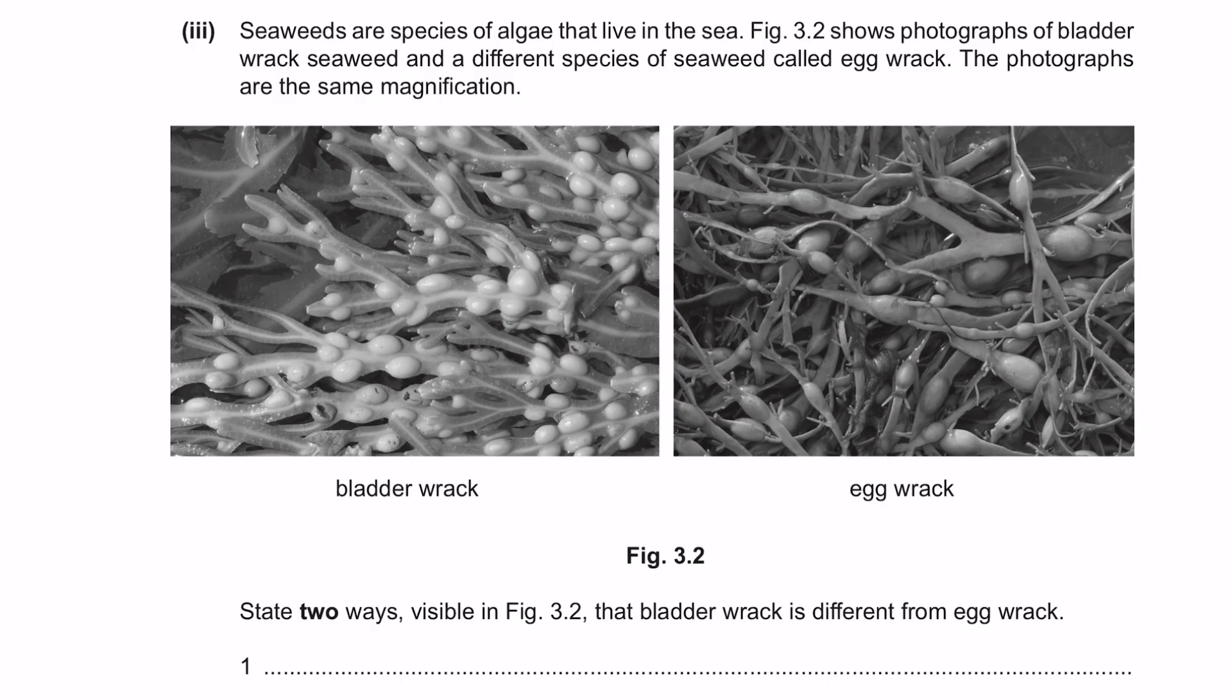Part 3. Seaweeds are species of algae that live in the sea. Figure 3.2 shows photographs of bladder rack, this, and a different species of seaweed called egg rack, this one. The photographs are of the same magnification.